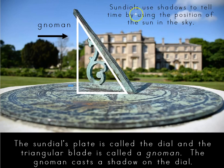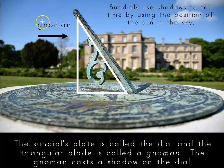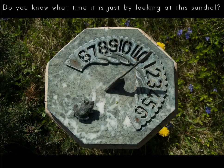Sundials use shadows to tell time by using the position of the sun in the sky. The sundial's plate is called the dial, and the triangular plate is called the gnomon. The gnomon casts a shadow on the dial. Do you know what time it is just by looking at the sundial?